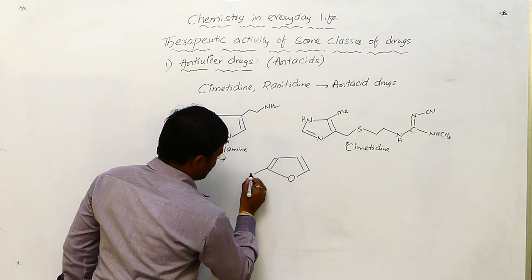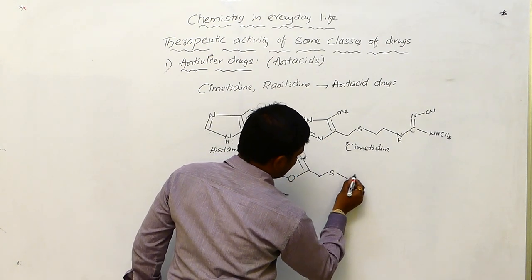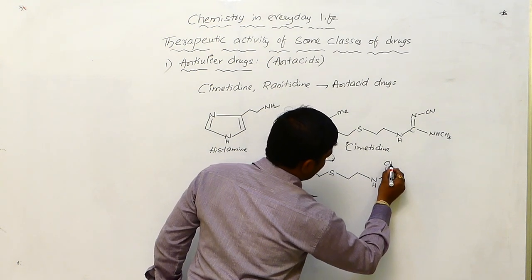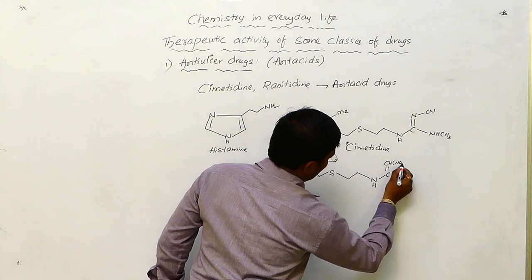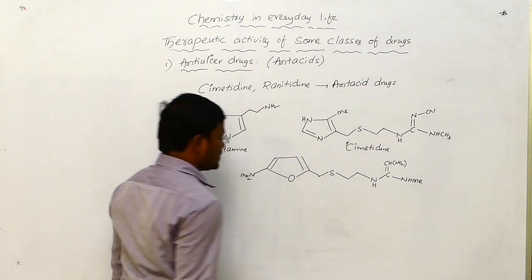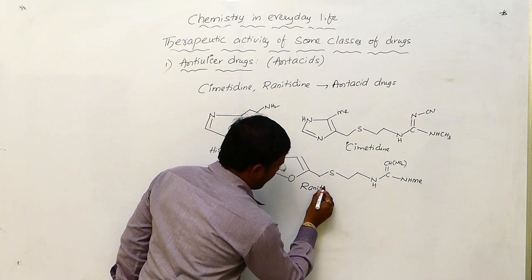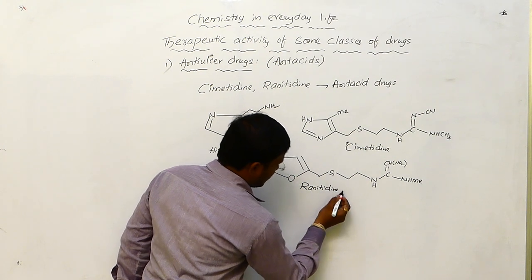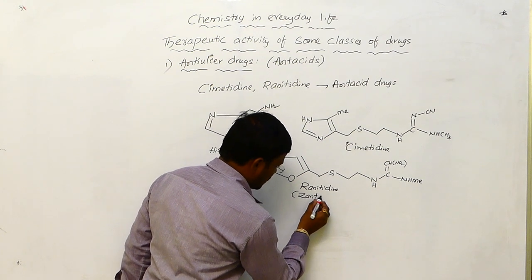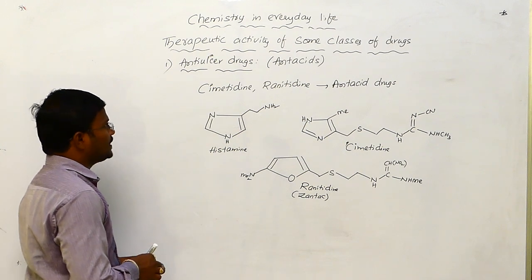The structure of ranitidine is: S, NH, C double bond CH, NO2, NH, ME. So this is the structure of ranitidine. The widely used drug worldwide is ranitidine. It is available in the form of ZANTAC. So this is about anti-ulcer drugs.